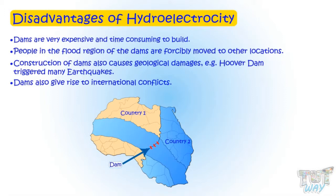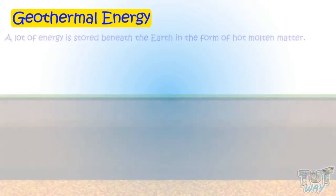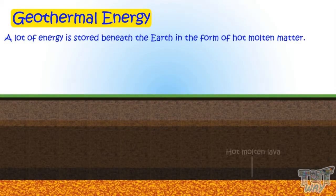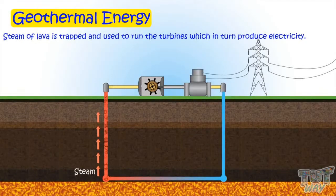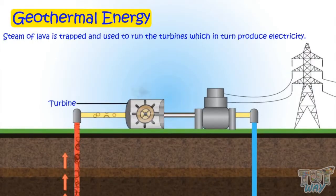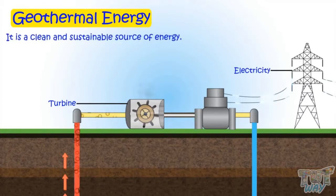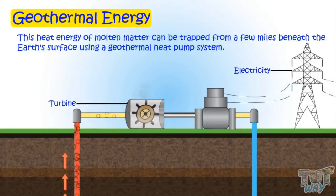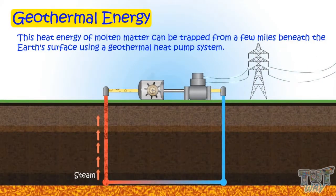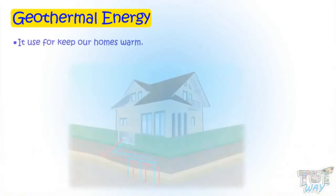Now let's learn about another renewable source of energy — geothermal energy. A lot of energy is stored beneath the earth in the form of hot molten matter, and this energy can be trapped through various means. For example, steam from lava is trapped and used to run turbines, which in turn produces electricity. It is a clean and sustainable source of energy. This heat energy can be trapped from a few miles beneath the earth's surface using a geothermal heat pump system, and can be used to keep our homes warm.